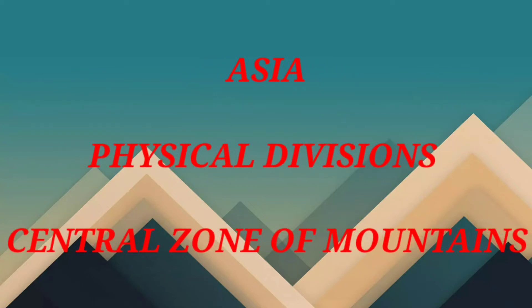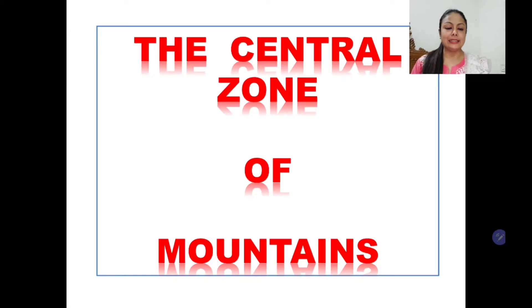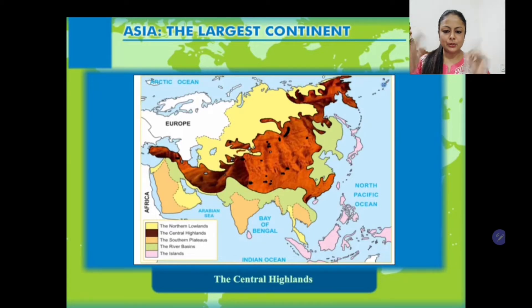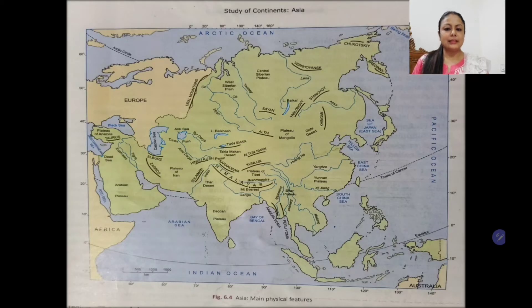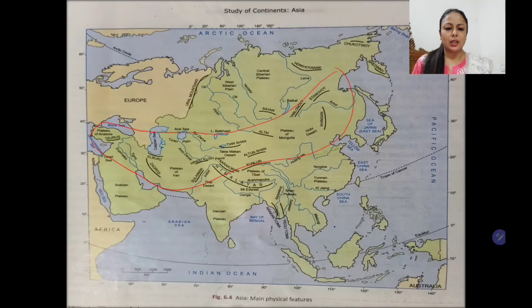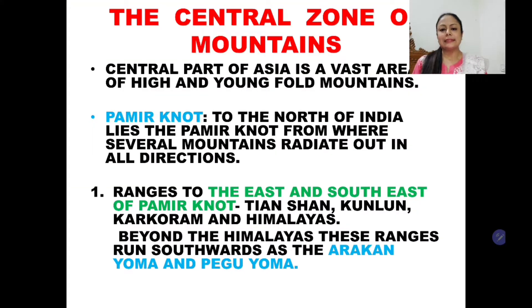Hello and welcome, dear students. In this module we will learn further about the physical divisions of Asia. We are going to learn about the central zone of mountains of Asia. In the map, the brown region shows the central highlands or the central zone of mountains. This region has several mountain ranges, all forming the central zone of mountains.